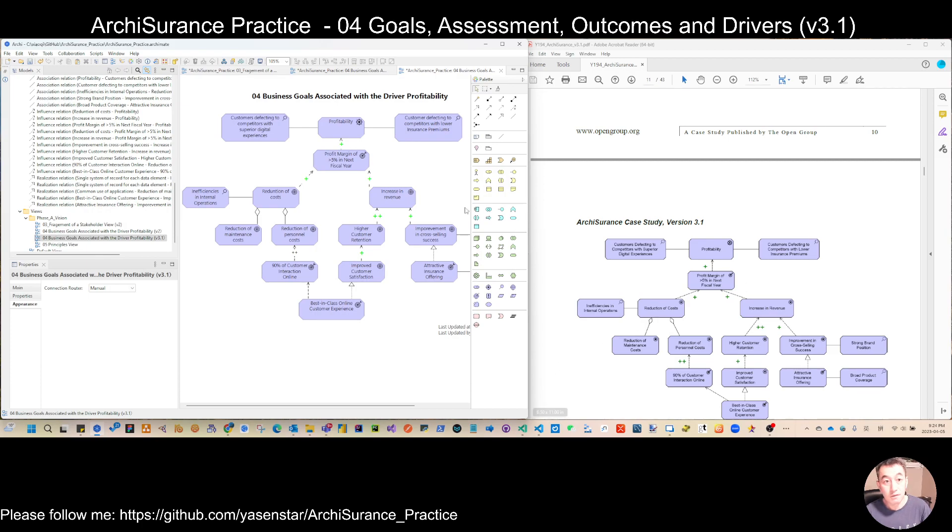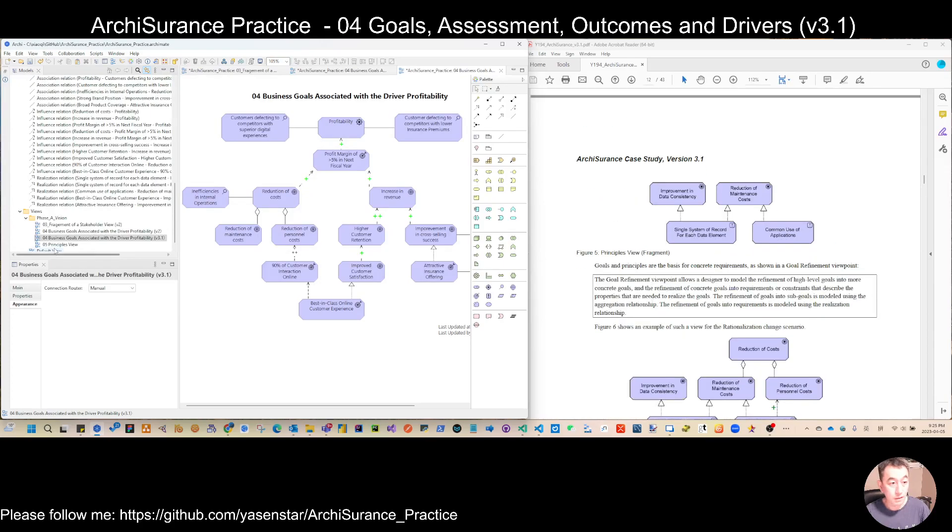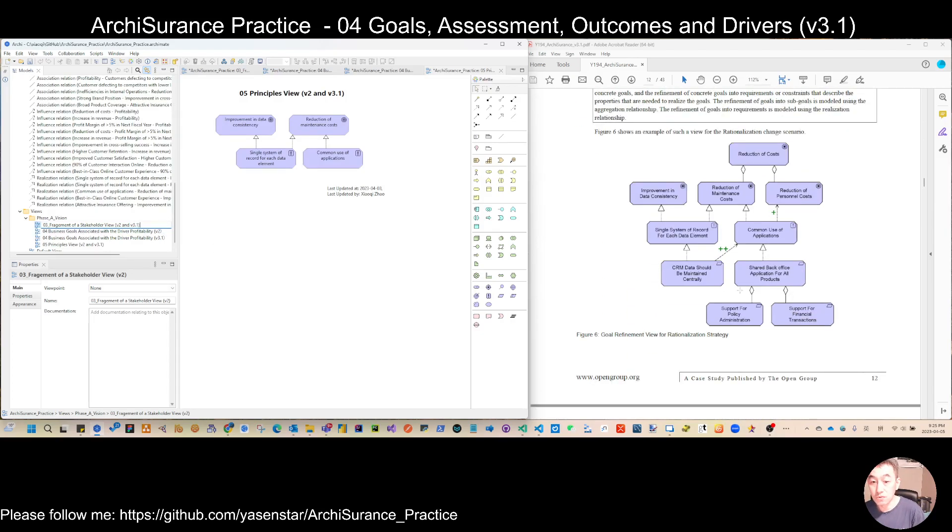That's it for this revised version 3.1 to number four. Next time we will double check number five. I already verified it's the same so we don't need to change this. But we add this as version 2 and version 3.1. And then this one is also after this we are starting to do the realization strategy view. Thank you for watching. See you next time.